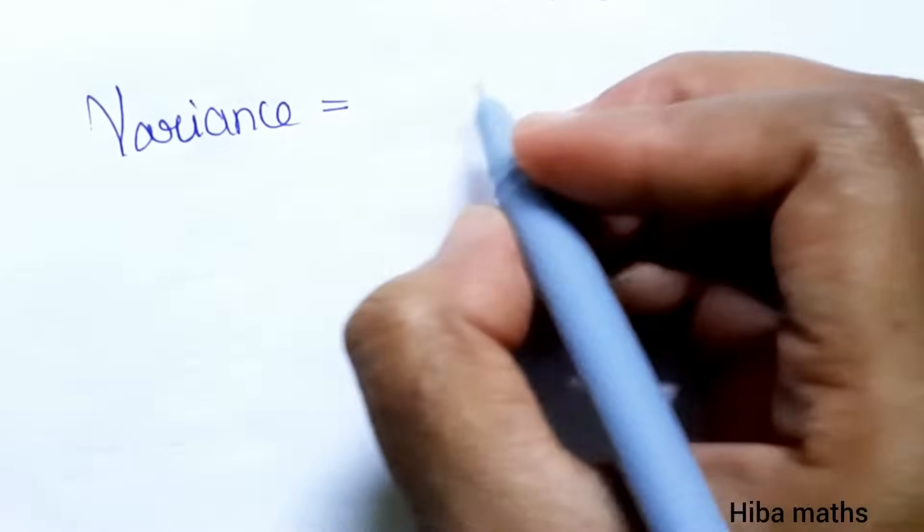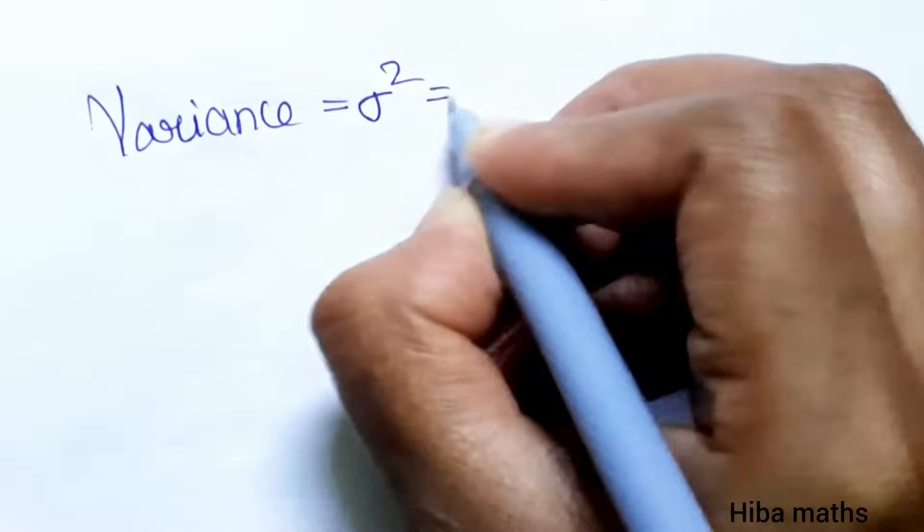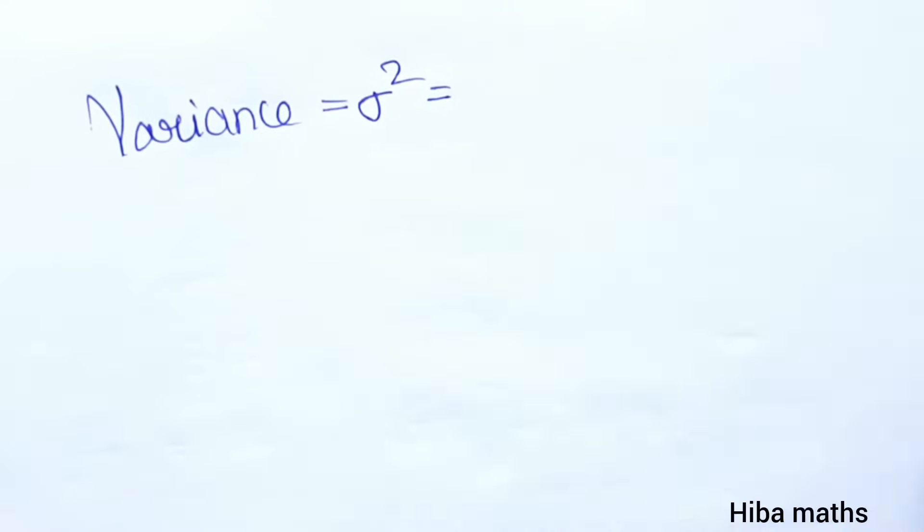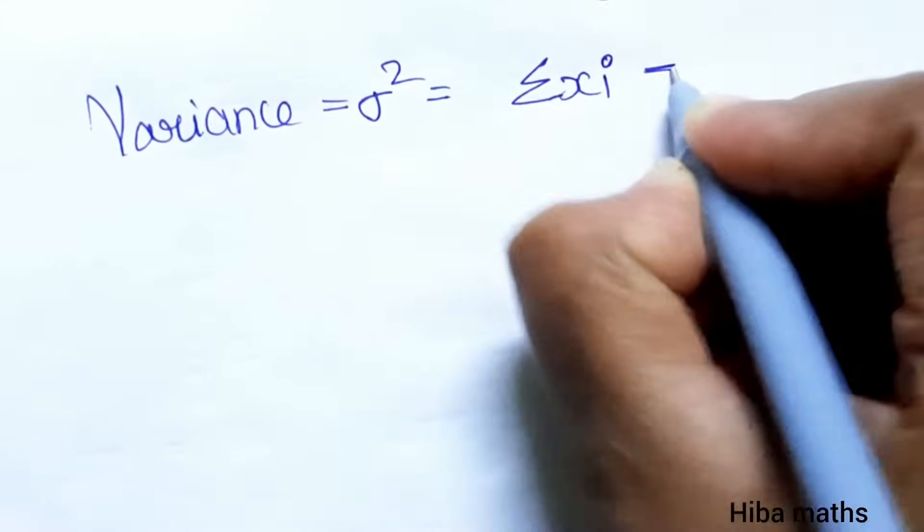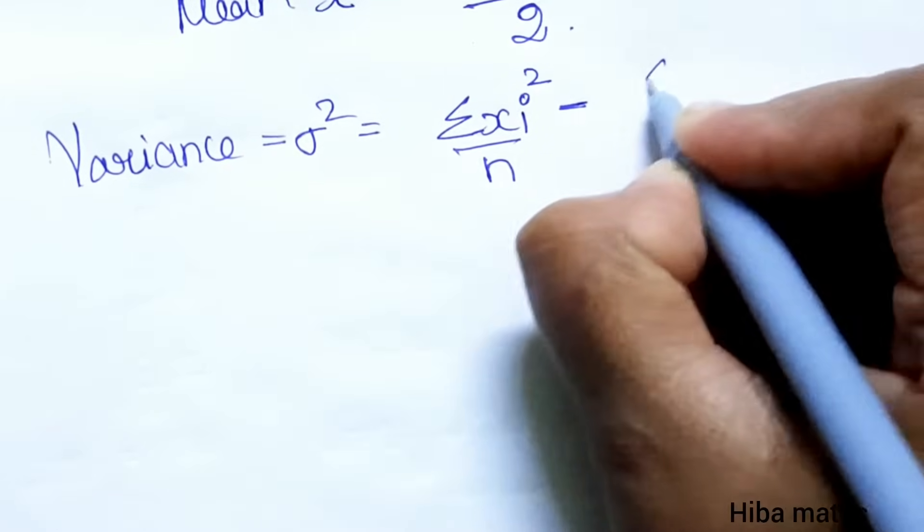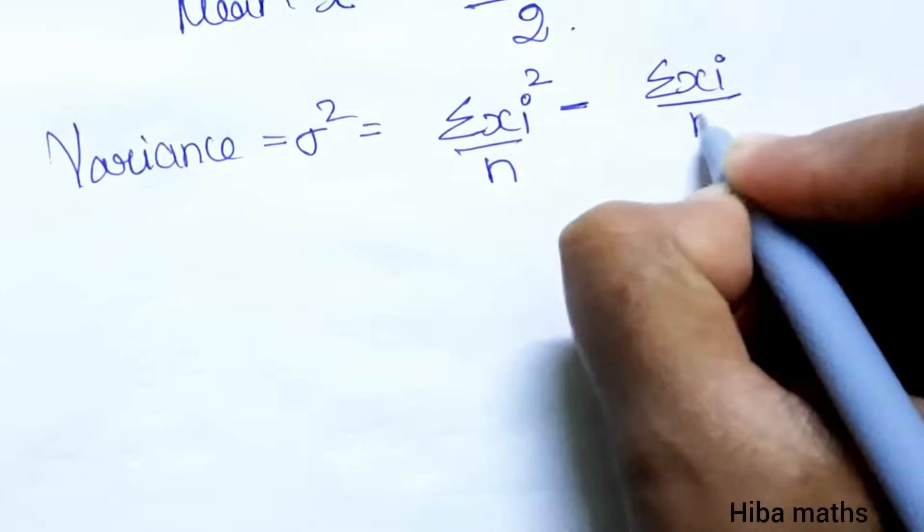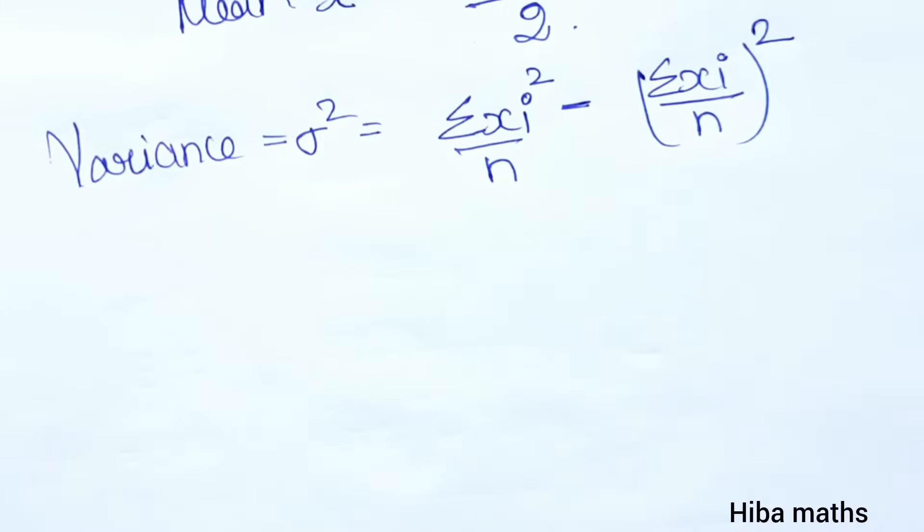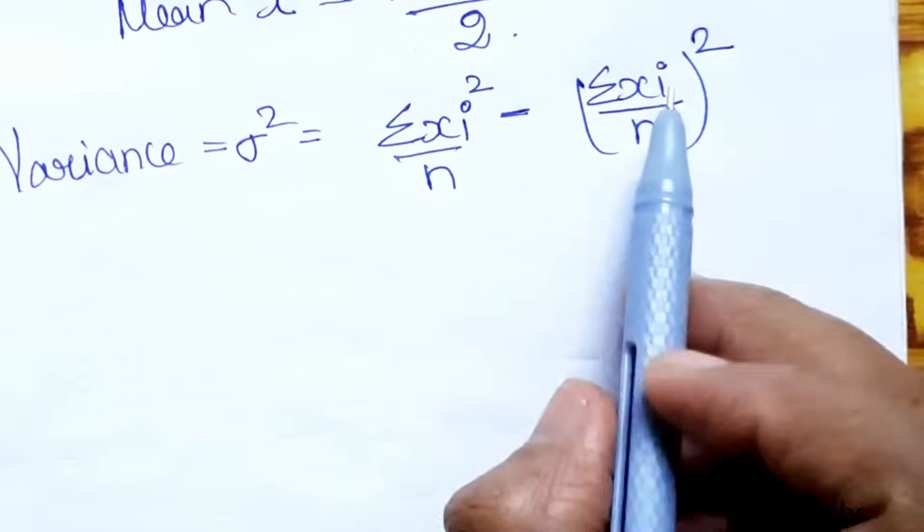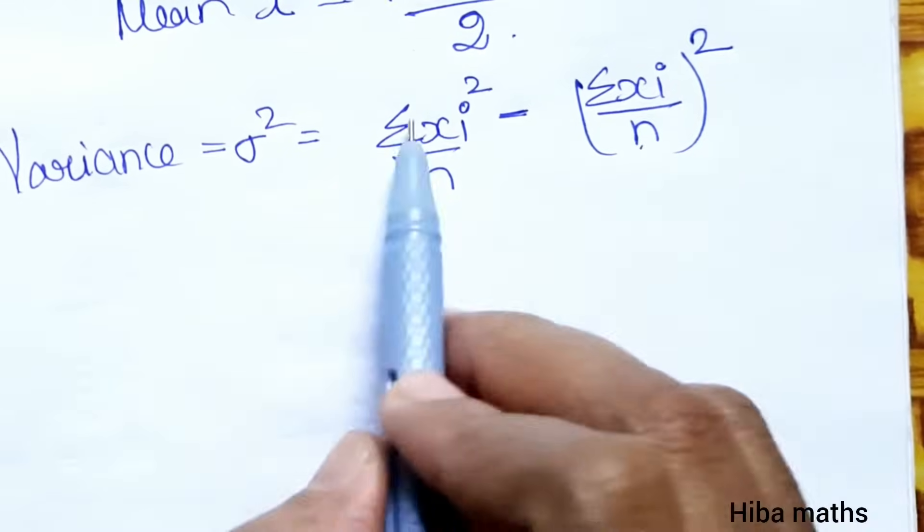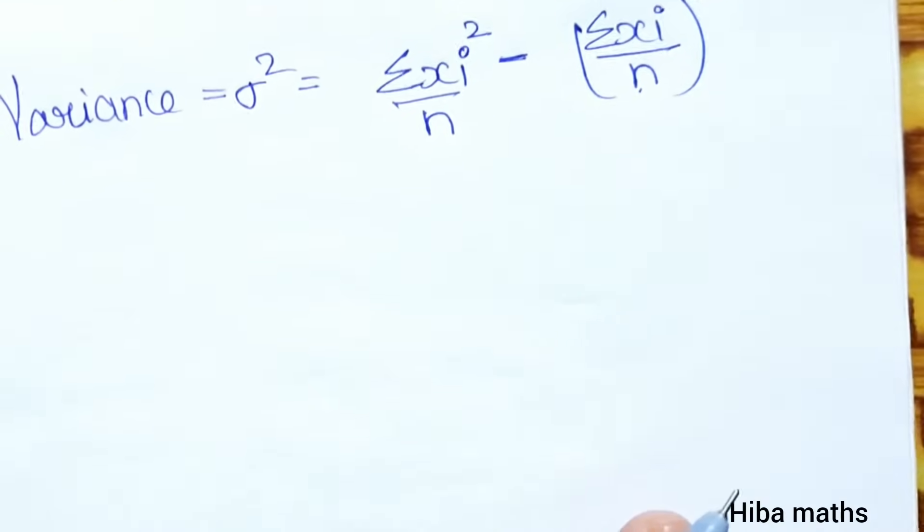Variance. Variance formula: square root, standard deviation, summation of x i square by n, minus summation of x i by n whole square. That is the square root. Now if we call the value x i and n, and the summation of x i square, what do we do?